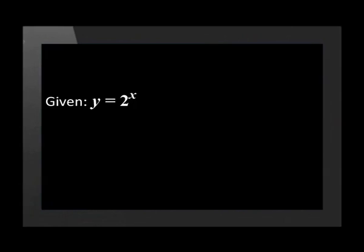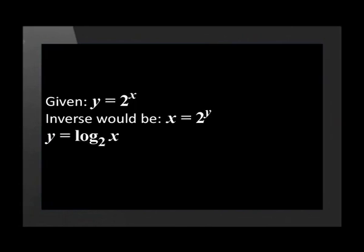This exponential function is a relatively easy one to plot. Let's find its inverse now. The original function was y = 2^x. The inverse would be x = 2^y. We use logarithms to make y the subject of the formula. This gives us y = log₂(x).